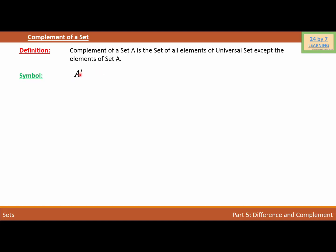In order to explain the complement of a set, I'm going to consider an example. Let set A = {A, B, E} and the universal set U = {A, B, C, D, E, F, G, H}. To explain the complement, I'm going to use a Venn diagram.